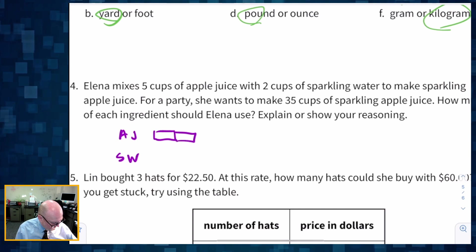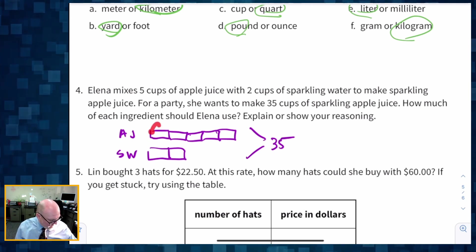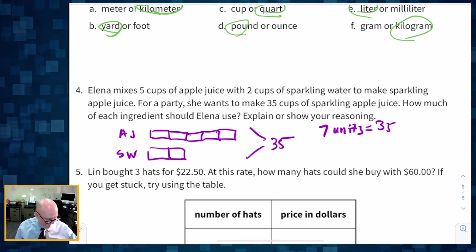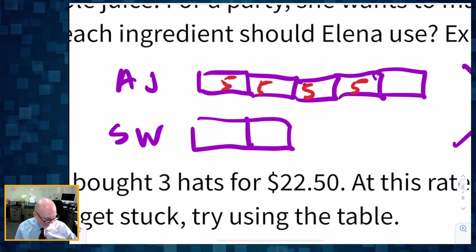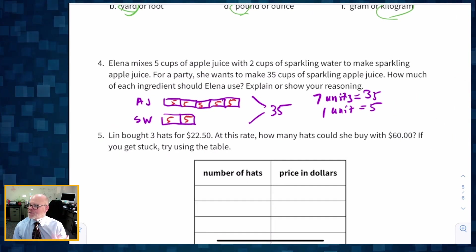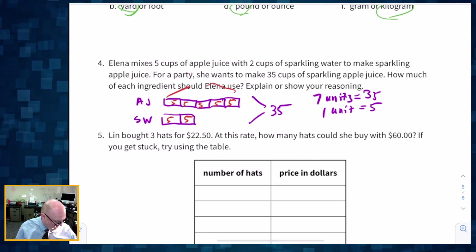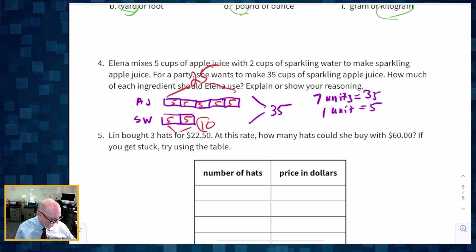And the ratio is five to two. So I'm going to draw one, two, three, four, five. And then I've got two units down here. And for a party, she wants to make 35 cups of juice, sparkling juice. So there we go. And we know that we have seven units. And these seven units is equal to the 35. So that means each unit is five, represents a five. And so I can just insert into each of these units, five, five, five, five, five, five, and five. And then the question is, how much of each ingredient should she use? Well, we can see that she needs 25 cups of apple juice and she needs 10 cups of sparkling water.